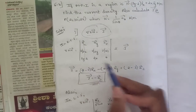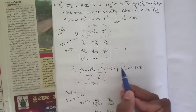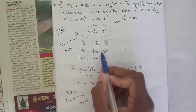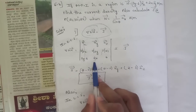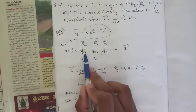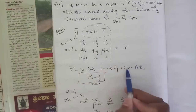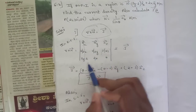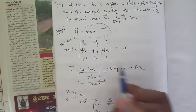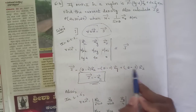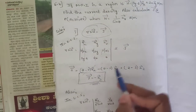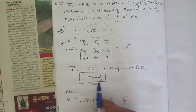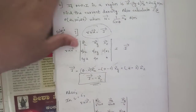For the az component: (∂/∂x)(2x) − (∂/∂y)(3y−2) = 2 − 3 = −1. So J = −az A/m². That is the current density for the first case.